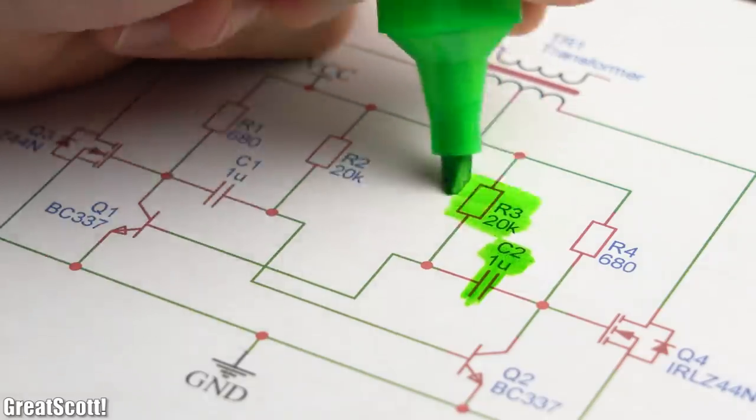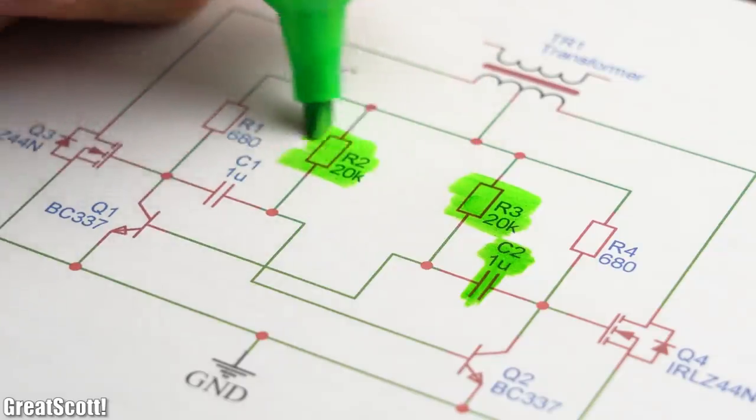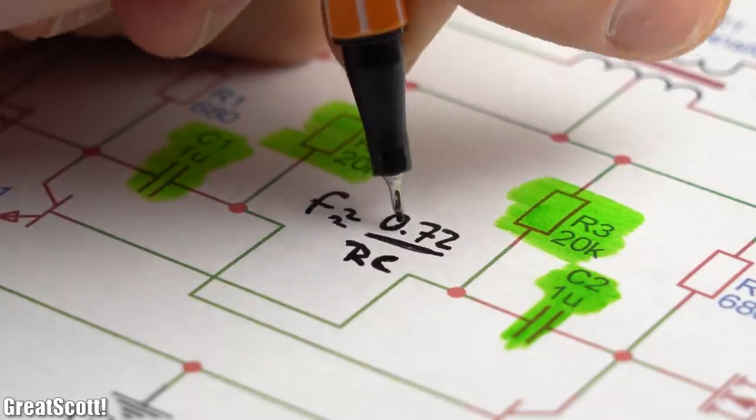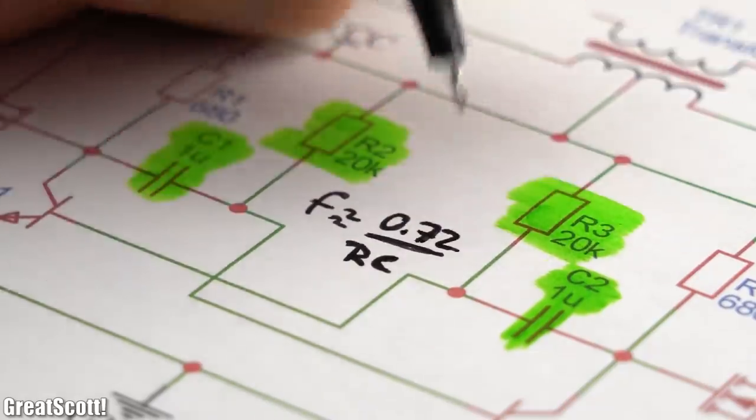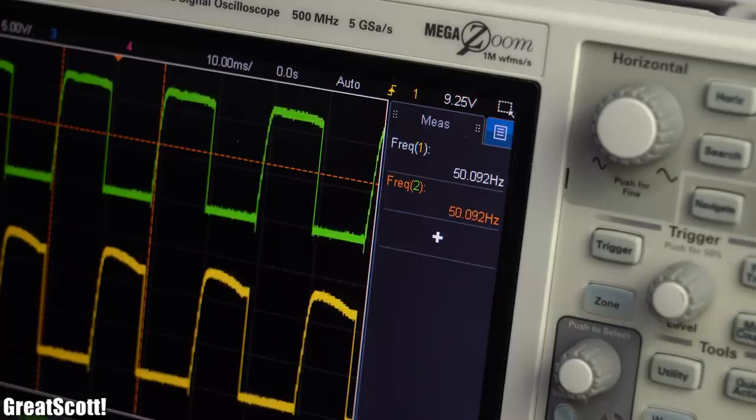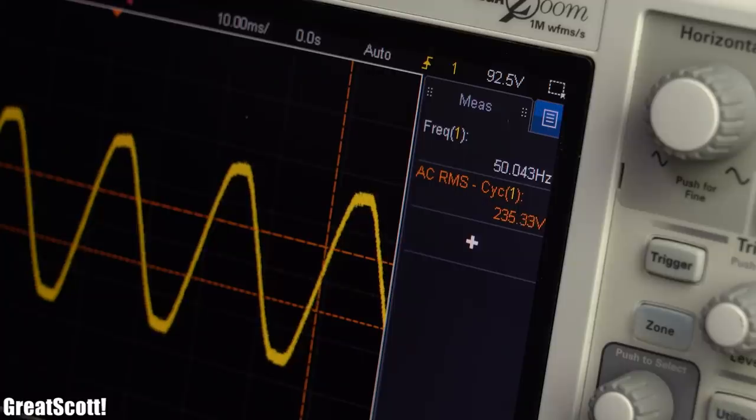The frequency at which this oscillation occurs is set by these resistors and capacitors and can be calculated approximately like this. In my case, the used components deliver a frequency of around 50Hz, which is the same as with the mains AC voltage here in Germany.